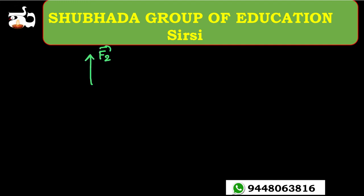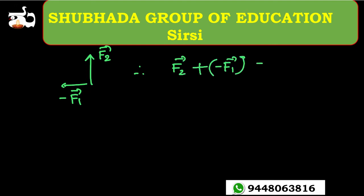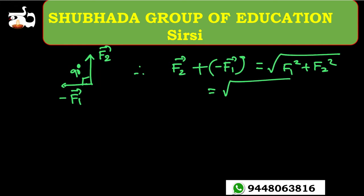The resultant diagram shows F1 vector, F2 vector, and the minus F1 vector. So F2 vector plus (minus F1 vector) — we need to find the resultant. Both vectors are at 90 degrees, perpendicular to each other. So the resultant equals the square root of F1 squared plus F2 squared, which is the square root of 500 squared plus 250 squared.